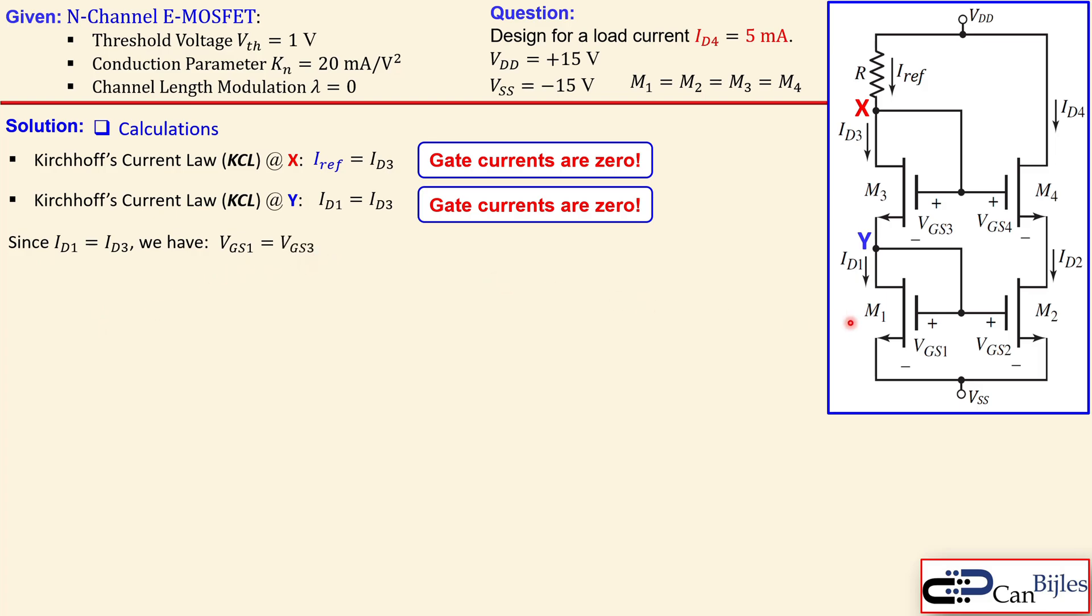Now since ID1 and ID3 are equal to each other, we have VGS1 and VGS3 are equal. Because the gate to source voltage of each MOSFET, if you consider channel length modulation to be zero, will determine the drain current. Now since VGS2 is equal to VGS1, because this is a parallel configuration, we have that ID2 must be equal to ID1. Now since also ID2 is equal to ID4, because ID4 will be also the gate and source current, and the gate current is zero, so ID4 is equal to ID2.